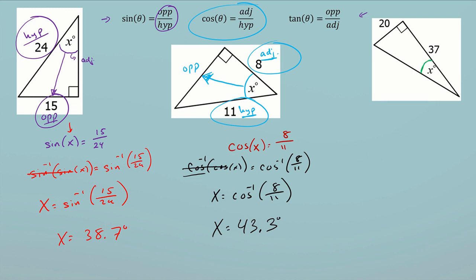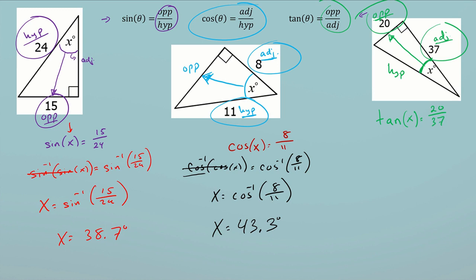Looking at the last problem, everything is the same. First, identify the angle of reference — that's the angle I'm looking for. The side across from it is the opposite side. I should always identify the hypotenuse, which is across your 90-degree angle and is the longest side. The side next to my angle of reference is the adjacent side. I circle the information I have — in this case opposite and adjacent. The function with both opposite and adjacent is tangent.